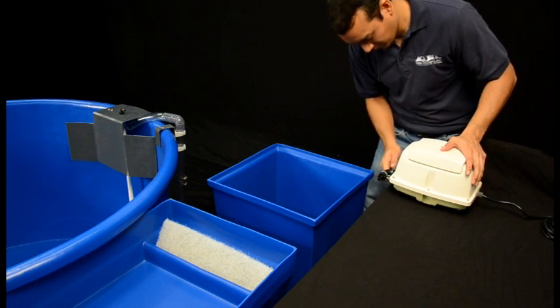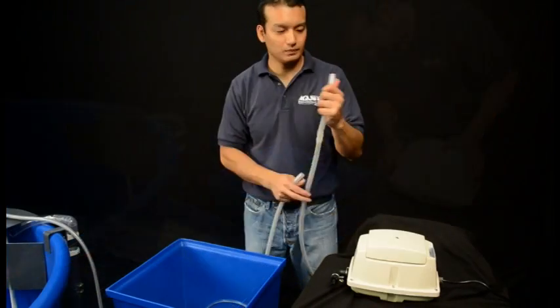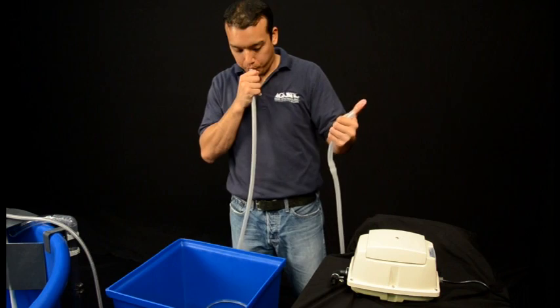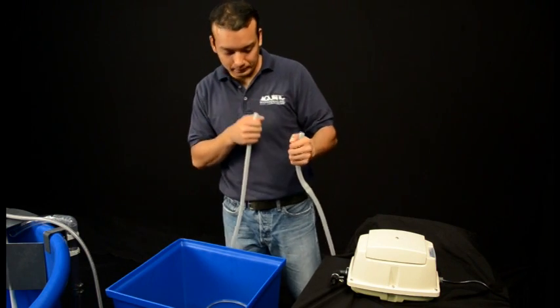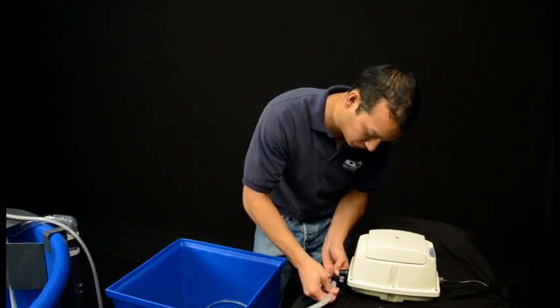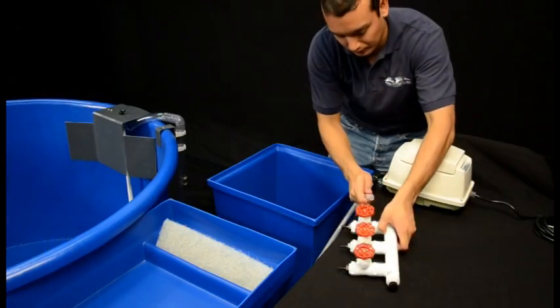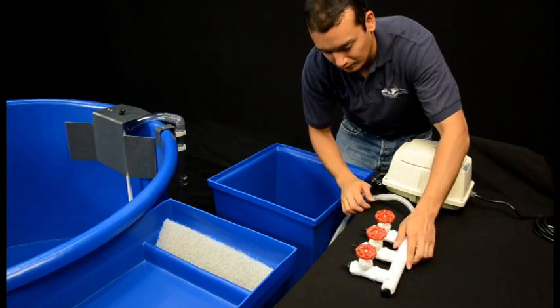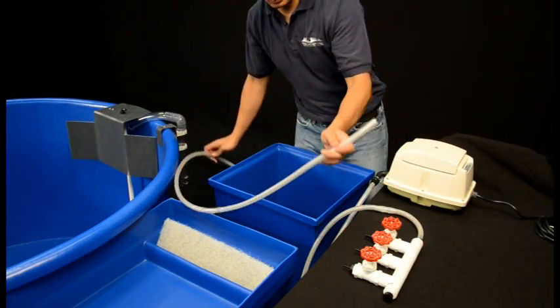To connect the air pump to the manifold, you will use the reinforced tubing run that contains a check valve. Test the check valve by blowing into each end of the tubing to determine which side is the inlet and which is the outlet. Connect the end of the tubing that allows airflow to the barb fitting on the air pump outlet. Connect the opposite end to the manifold inlet nipple.